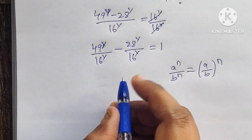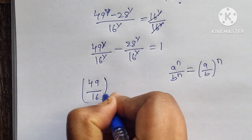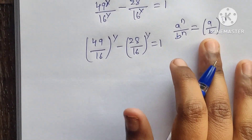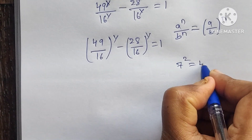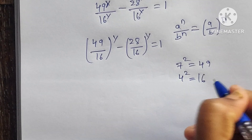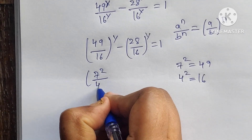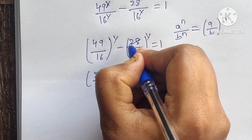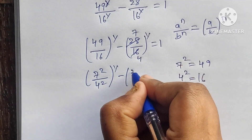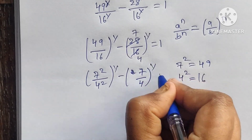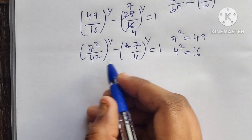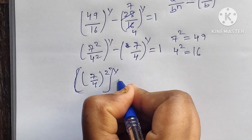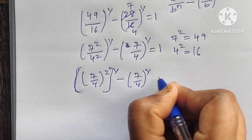I am going to apply this formula here. So (49 divided by 16) whole to the power of y minus (28 divided by 16) whole to the power of y equals 1. Now 49 equals 7 squared and 16 equals 4 squared, so we can write it as (7 squared divided by 4 squared) whole to the power of y minus (7 divided by 4) whole to the power of y equals 1. This simplifies to (7/4) whole to the power of 2y minus (7/4) whole to the power of y equals 1.